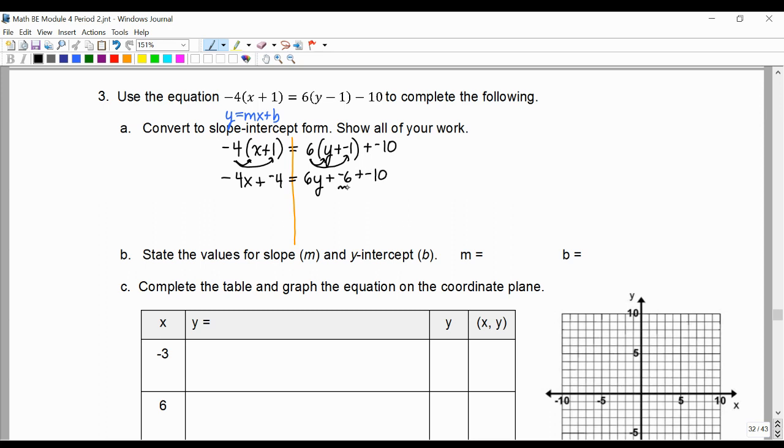Next step is we notice that these terms on the right side are like terms, so we are going to combine them. Negative 6 plus negative 10 is negative 16.